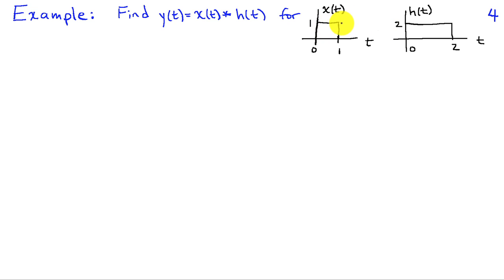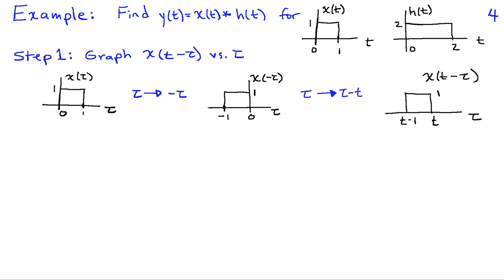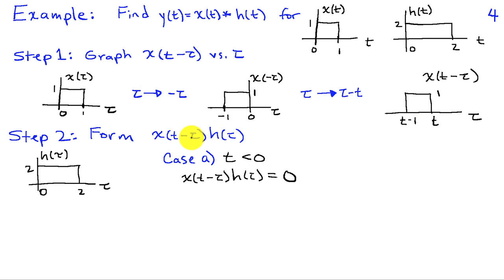I'm going to do the convolution of these two signals. First, I need to graph x(t − τ) as a function of the independent variable τ. I'll start with x(τ), reflect this about the origin to obtain x(−τ), then replace τ with τ − t to obtain x(t − τ). Whatever was at the origin in x(−τ) now shows up at time t, because we've shifted the signal by t units. So what was at minus 1 is now going to be at t minus 1. In step 2, we form the product x(t − τ) · h(τ), and it's useful to recognize that for certain ranges of t, we often get the same answer.